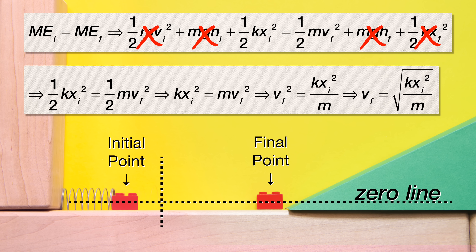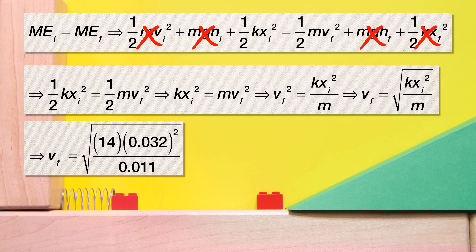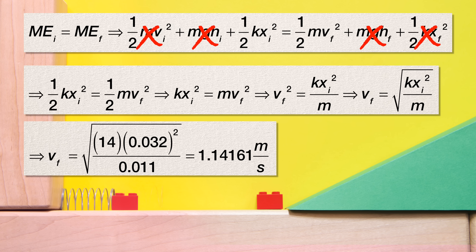With numbers, that is the square root of 14 times 0.032 squared divided by 0.011, which equals 1.14161 meters per second — the final velocity of the block at the end of the level surface, which is also the initial velocity of the block on the incline.